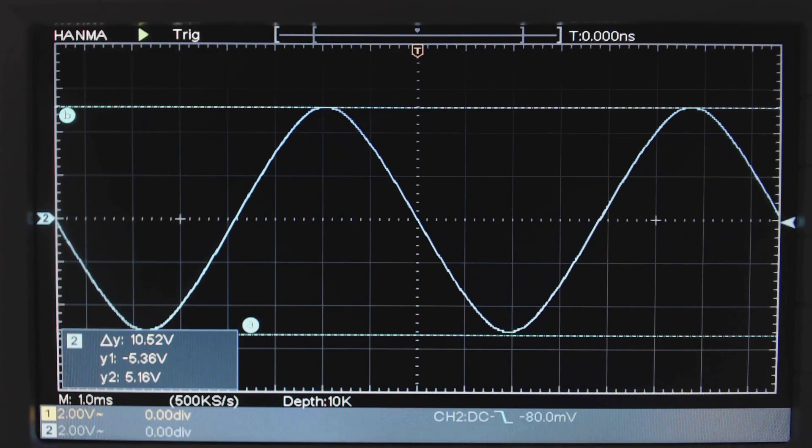Amplitude matters, especially on VCOA, because that is the signal that gets fed through the modulation index. So you want to make sure that those amplitudes are correct. So that is our sine output. So that looks good.